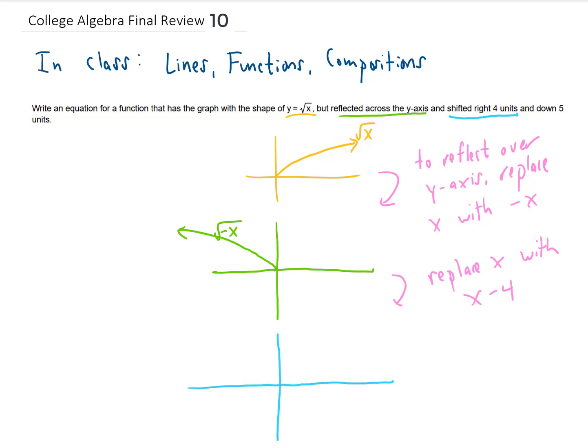That's going to take every point on this graph, including 0, 0 here, and it's going to shift all of those points right four units. So now our graph is going to look like this, and it's going to be the square root of negative, in parentheses, x minus 4.